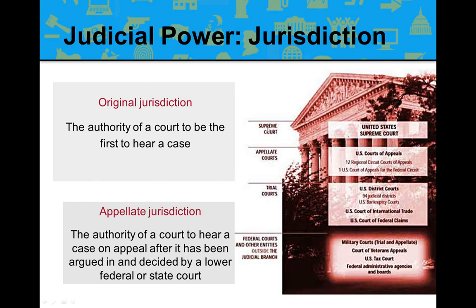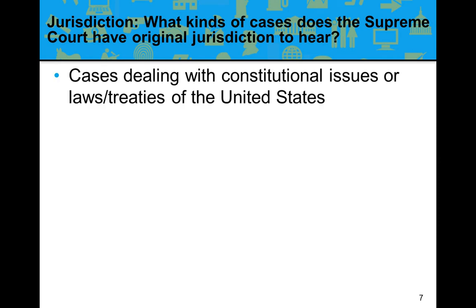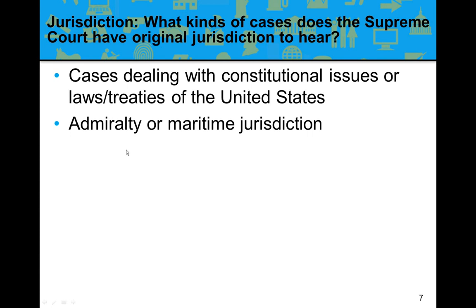What types of cases does the Supreme Court have original jurisdiction over — that is, heard for the very first time at the highest level? Cases dealing with constitutional issues, laws, or treaties of the United States go there first. Any admiralty or maritime case — crimes or issues on the high seas or international waters — goes to the Supreme Court, since they're not within a particular state's jurisdiction.